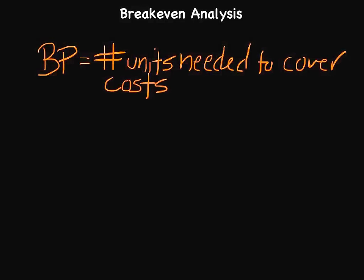Ideally as a business, you wouldn't just sell whatever number this is, because at that point you're covering your costs but not necessarily making any money. Ideally, you'd be able to sell more than this. So this is a great starting point for a discussion — is it feasible for us to sell this number of products? And if it isn't, what are some of the things we can do? What are the variables we can change so that it is a little more reasonable?